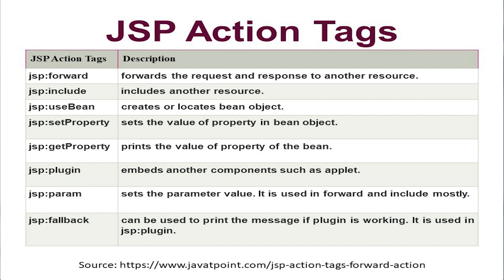These are the different JSP action tags. JSP forward forwards the request and response to another resource. When forwarding the request or response, we can also pass parameters. In a particular page, we can include other resources and other files. JSP useBean creates and locates a bean object for using the JavaBean.